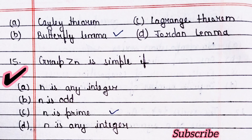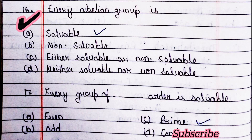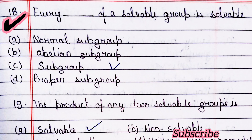Next question: group Zn is simple if — option C is right. Next question: every abelian group is soluble. Next question: every group of prime order is soluble — option C is right. Next question: every subgroup of a soluble group is soluble — option C is right.